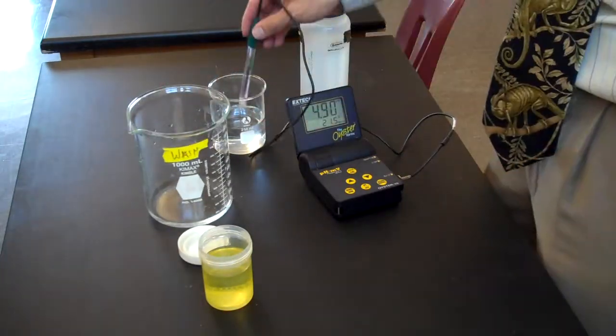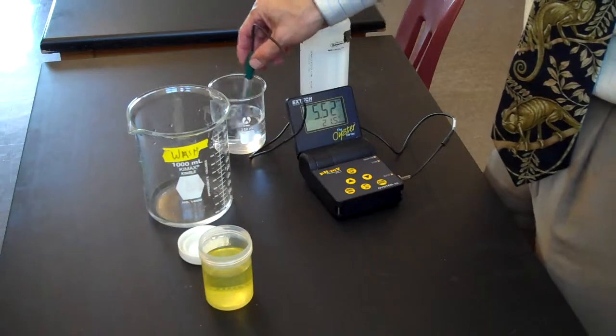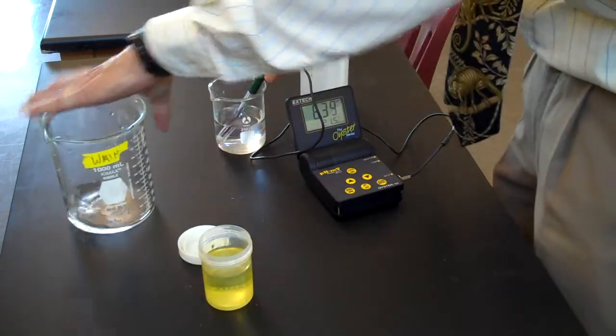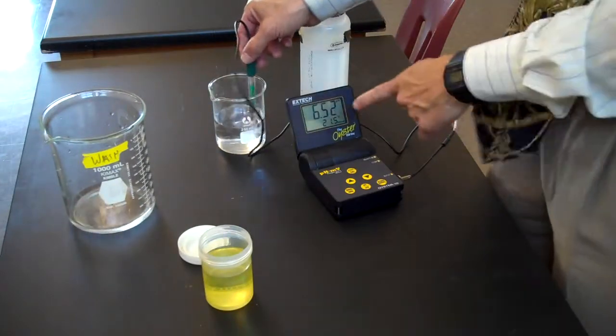Now I can immerse the electrode into the solution that I'm measuring. I'm stirring gently, stirring gently until I get a stable reading on the meter.